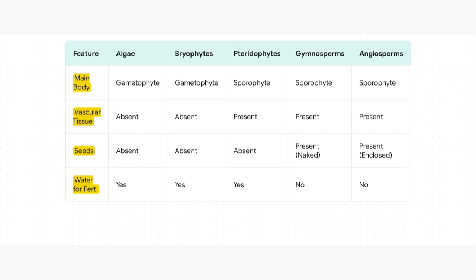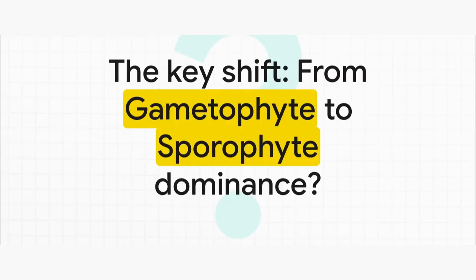Seeds: absent, absent, absent — then boom, present from gymnosperms onwards. And maybe the most important trend: water for fertilization. Yes, yes, yes for the first three. And then no, no for the advanced groups. This single table is pure gold for your last-minute revision. So after all this, what's the big picture? What was the most important evolutionary shift? It's really two things: the switch in dominance from gametophyte to sporophyte, and the journey to freedom from water. Those are the two trends that allowed plants to conquer the land.